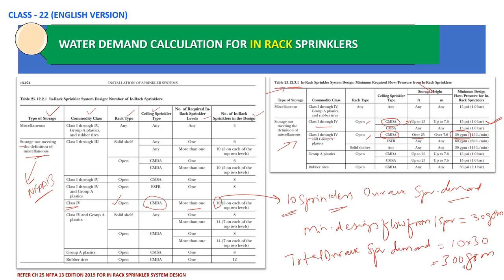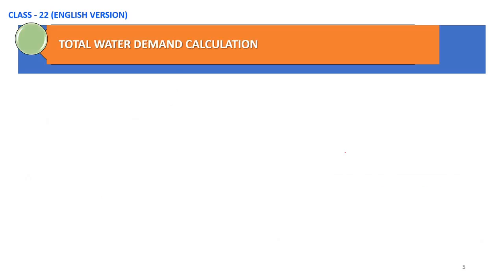In order to calculate the pump requirement, we have to calculate the total water demand, which we'll cover in the next slide. This is a very important slide — don't miss any portion because we are going to calculate the total water demand. This is different from our previous topics where we calculated ESFR, CMSA, or CMDA sprinkler demand. Please concentrate on this.